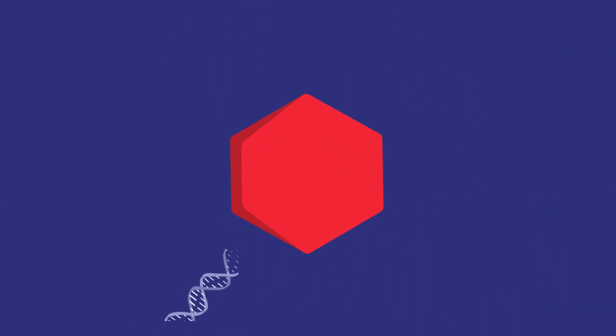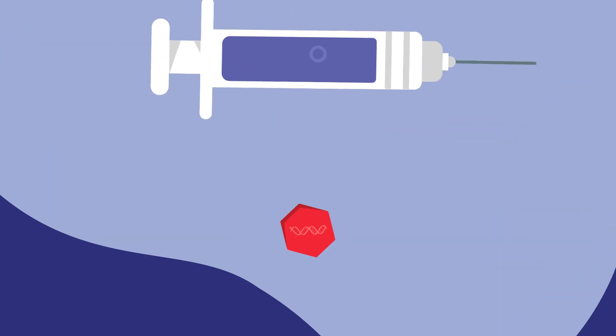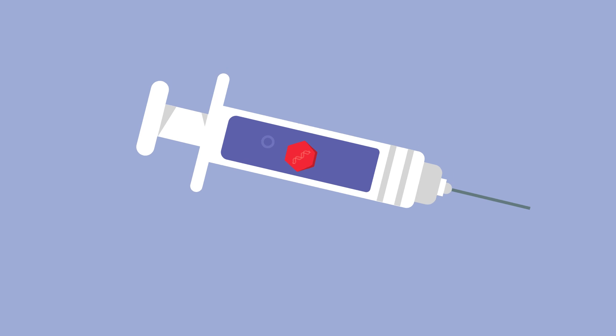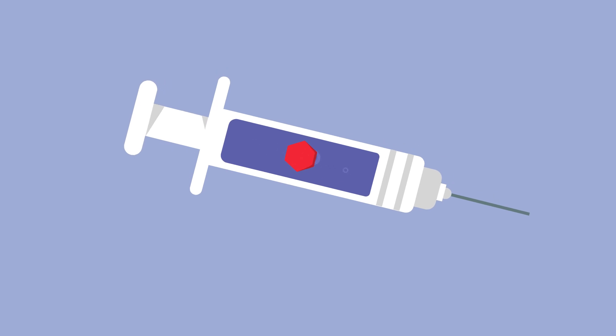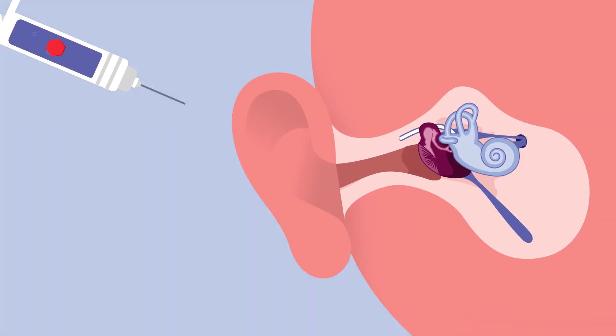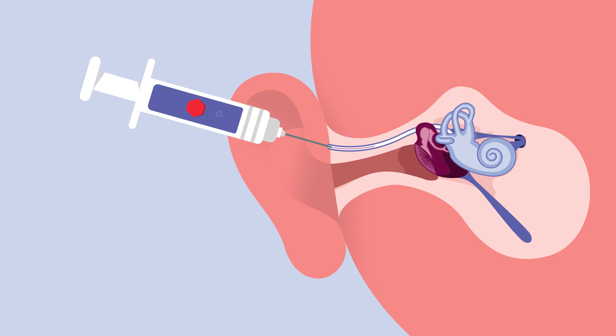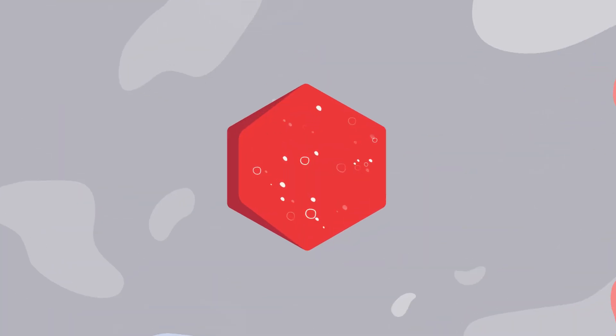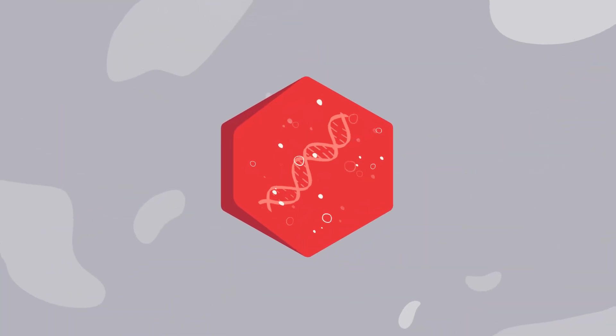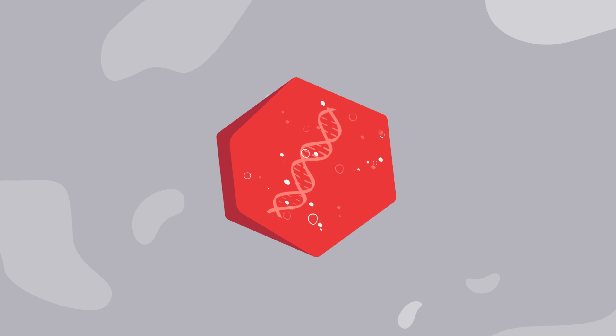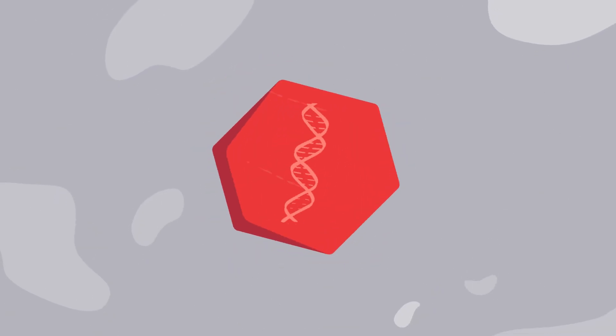Gene therapy uses a modified virus, called a viral vector, to deliver a working copy of the OTOF gene to the inner ear. There are several different surgical procedures that are being investigated with the common goal of delivering the gene therapy directly to the inner ear. Scientists know that viruses are good at getting into cells, so they have learned how to remove the harmful parts of the virus so only the working genes are delivered.